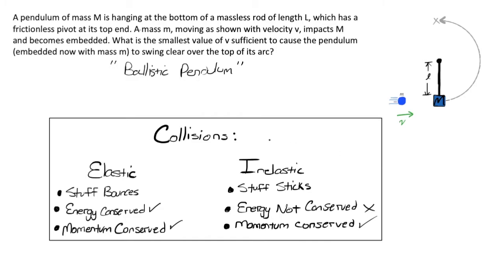There are also inelastic collisions where stuff sticks together and does not bounce off each other. Energy is not conserved in these situations, and you cannot use conservation of energy methods to find initial and final velocities. But you can use momentum. The moral of the story is that in both cases, momentum is conserved, which makes it seem that you can always rely on momentum to be helpful.